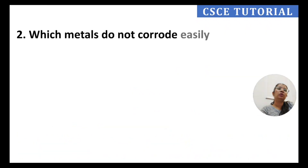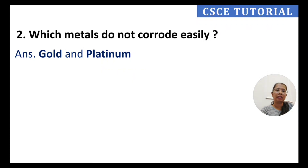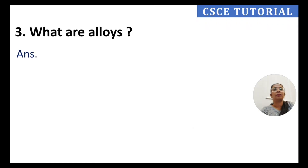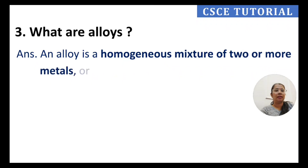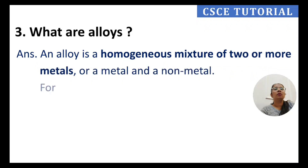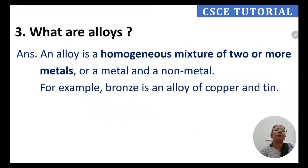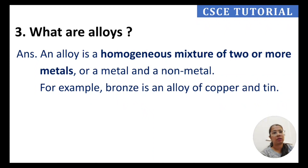Question 2: Which metals do not corrode easily? Answer: gold and platinum. Question 3: What are alloys? An alloy is a homogeneous mixture of two or more metals, or a metal and a non-metal. For example, bronze is an alloy of copper and tin. You can also mix a metal with a non-metal to form an alloy.